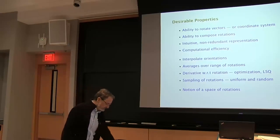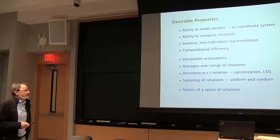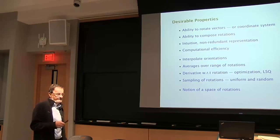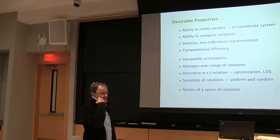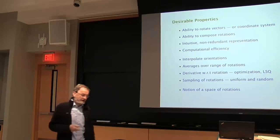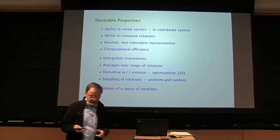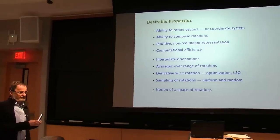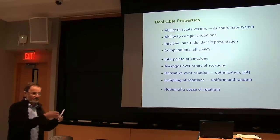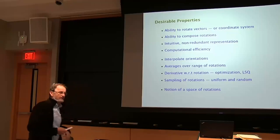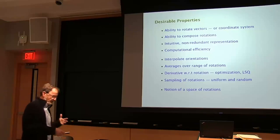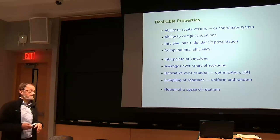Is the representation redundant? Orthonormal matrices use nine numbers to represent three things. A student points out that the columns have meaning: the first column is what happens to the x-axis, the second column to the y-axis, and the third column to the z-axis. Similarly the rows. So you can understand the rotation matrix that way, though you wouldn't immediately know the axis of rotation or the angle.